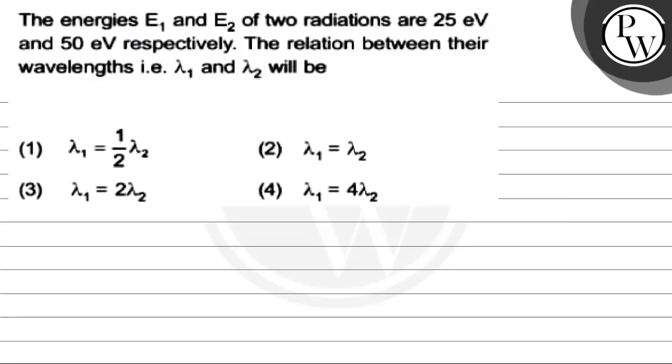Hello, let's read this question. The energies E1 and E2 of two radiations are 25 electron volts and 50 electron volts respectively. The relation between their wavelengths, that is lambda 1 and lambda 2, will be... We have 4 options.